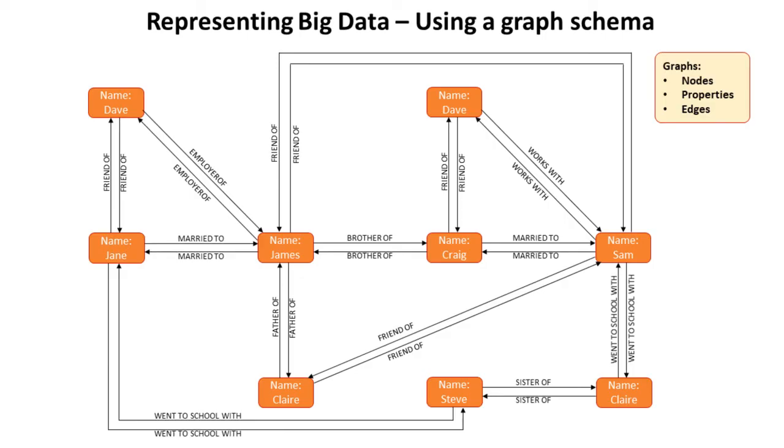If for example I wanted to find out all the information on who Craig was friends with or his relations, with a relational database if the data set was huge this could be quite complex and overwhelming. Well here I can simply go straight to the item Craig. And then I can follow the edges of the graph to see that Craig has a link to James via his brother, and a link to Dave, he's a friend, and is married to Sam for example.